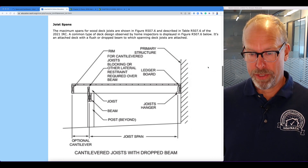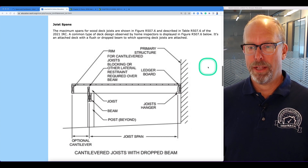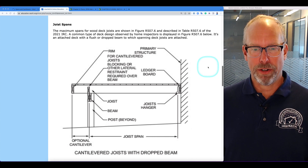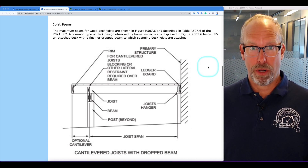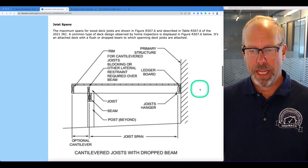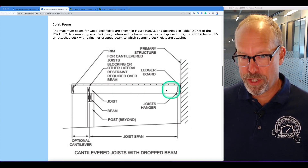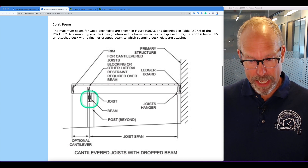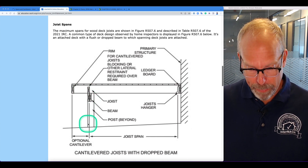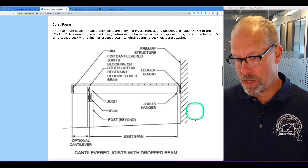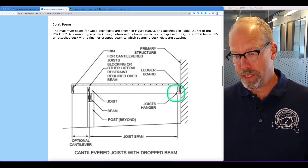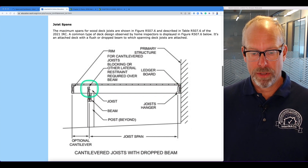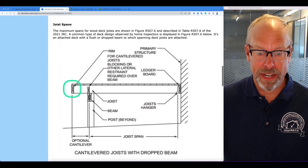The maximum span for wood deck joists are shown in figure R507.6 and described in table R507.6 in the 2021 IRC. A common type of deck designed and observed by home inspectors is shown in this illustration — an attached deck with deck joists attached with a flush or dropped beam resting on posts. There's the double 2x10 beam, the joist resting on the beam, and the attachment to the house with a ledger board and joist hangers. The joists span across to the post and optional cantilever, and the ends of the joists are banded together by the rim joist.